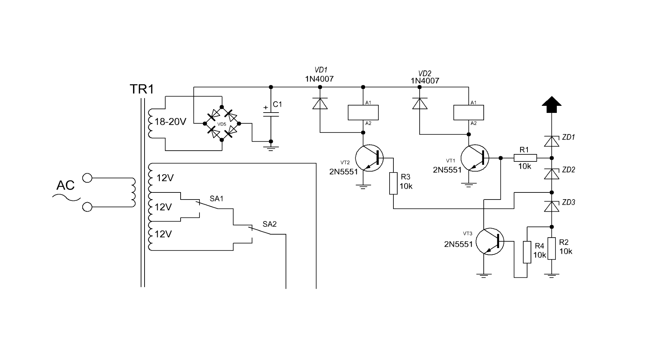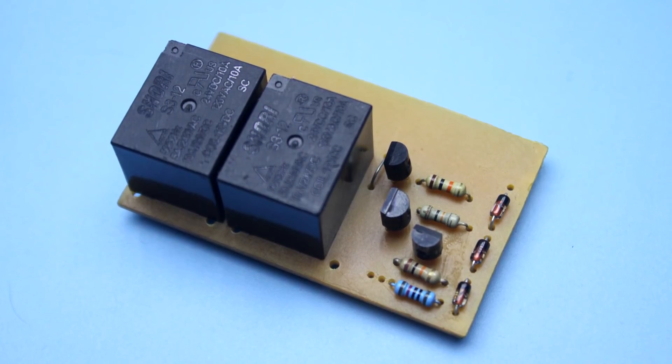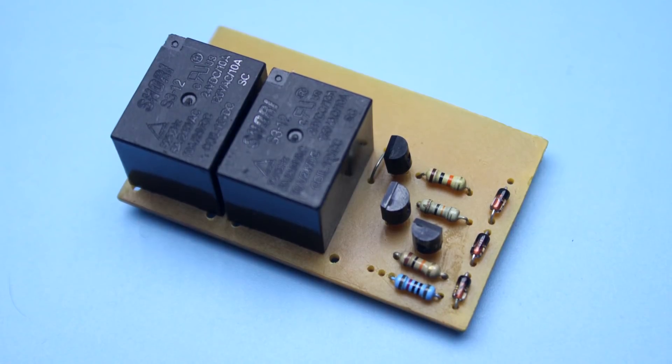If the voltage at the output of the power supply is greater than the sum of the stabilization voltages of the zener diodes, the third transistor is triggered and shunts the base of the transistor which controls the first relay to the ground. The transistor will close and the relay will shut off.